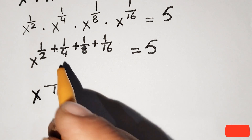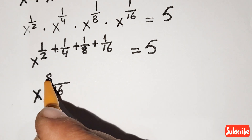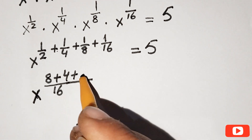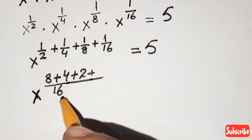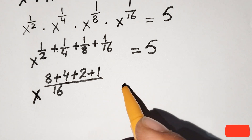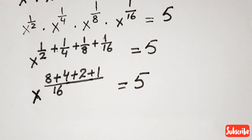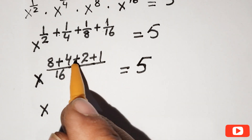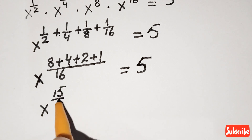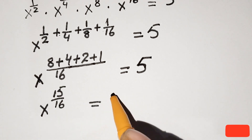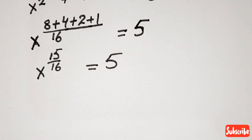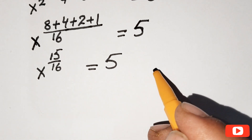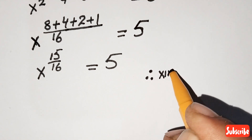To add these fractions, we find the LCM of 2, 4, 8, and 16, which is 16. So we get 8 over 16 plus 4 over 16 plus 2 over 16 plus 1 over 16, which gives us 15 over 16. So x to the power 15 over 16 equals 5. Now multiplying both sides' powers by 16 over 15.